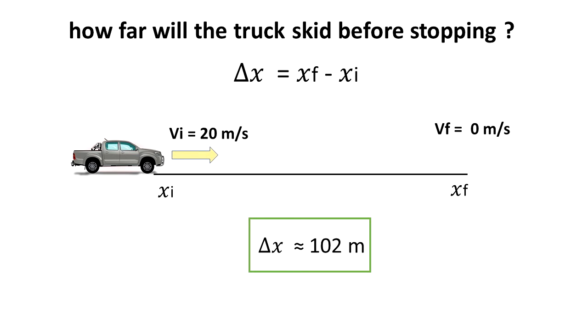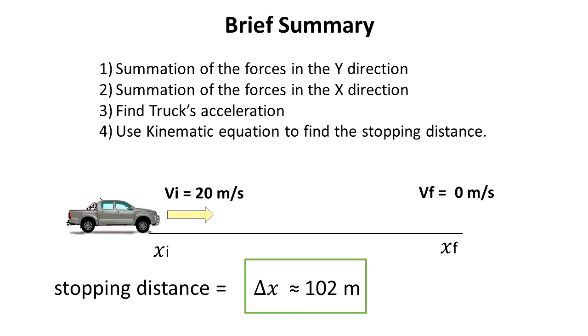Delta x is the change in position, the final position minus initial position. So let's do a brief summary. We did the summation of the forces in the y direction knowing that the net force is equal to zero. We did the summation of the forces in the x direction knowing that there is an unbalanced force that's friction and it goes in the negative direction. Then when we find the acceleration we used a time independent kinematic equation to find the stopping distance. That's delta x.